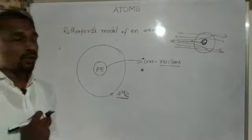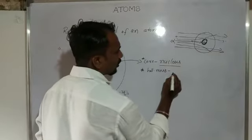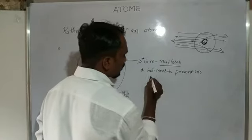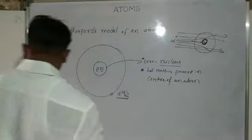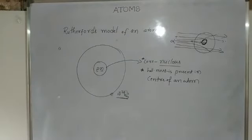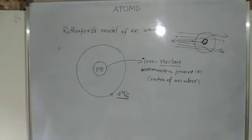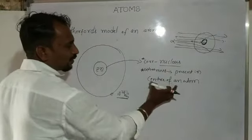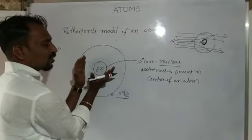So the whole mass of the atom is concentrated at the core, or center, of the atom. The entire mass is concentrated at the center of the atom, which is the nucleus. Therefore, the mass of an atom is essentially the mass of its nucleus.